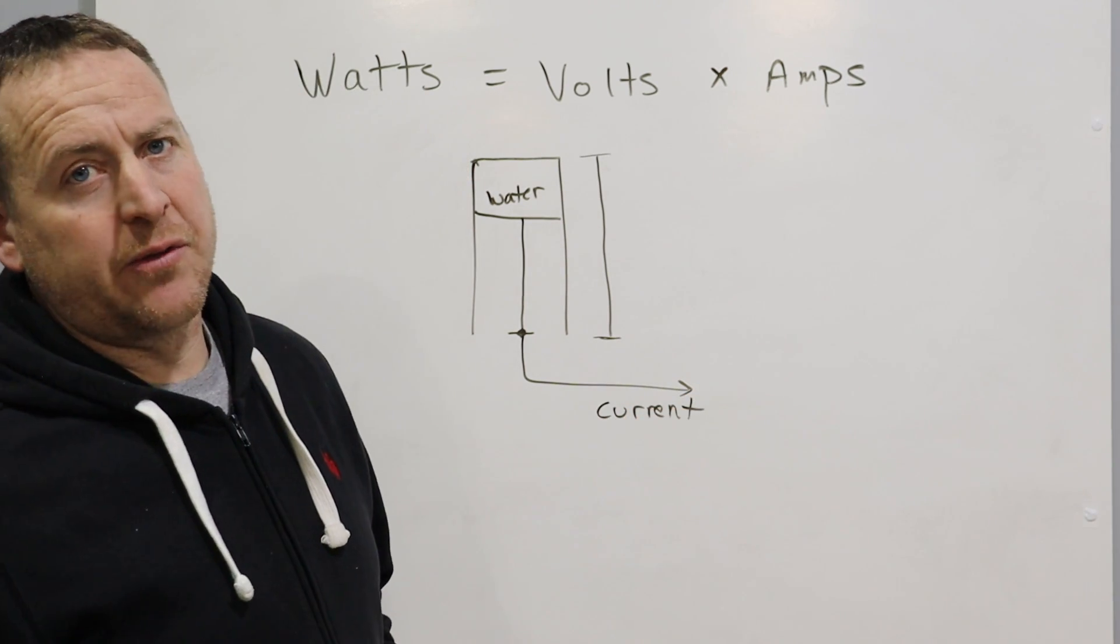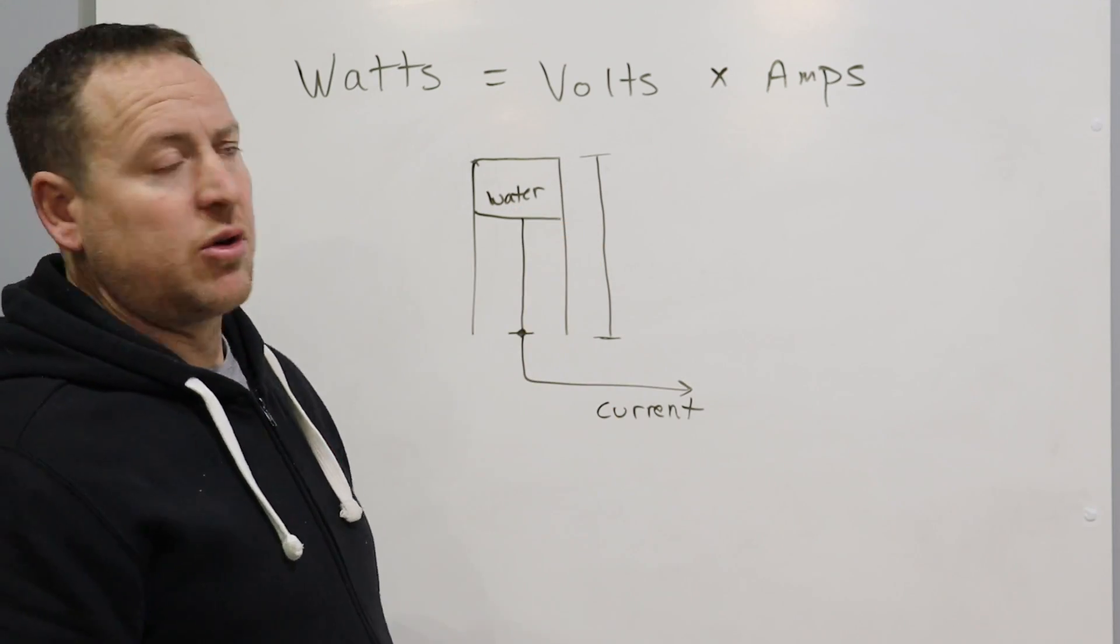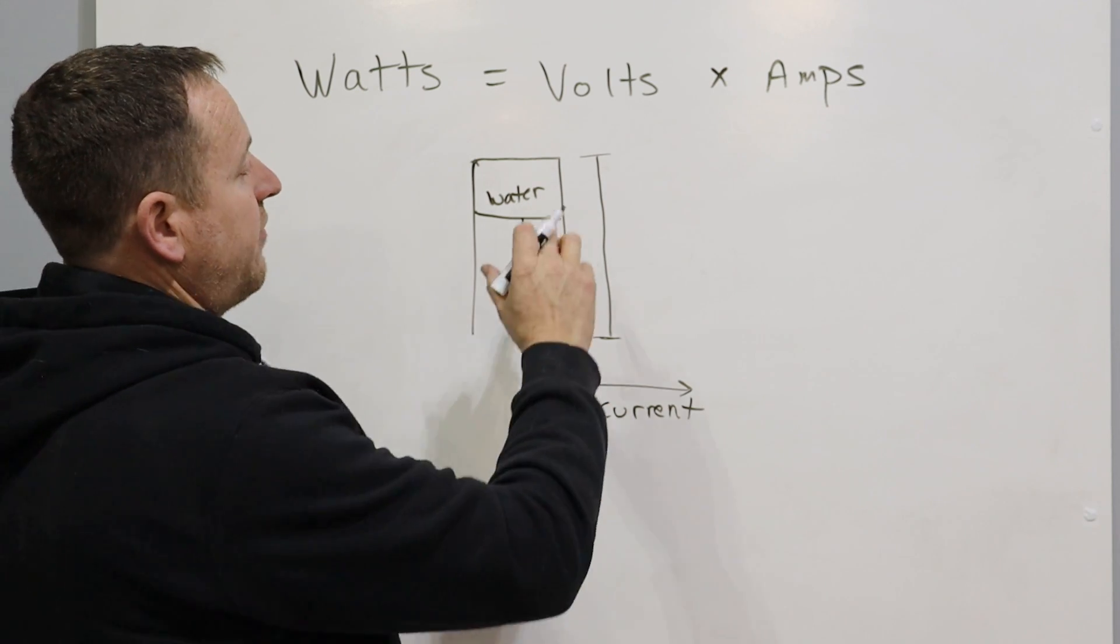The flow of water is current. But the pressure of the water, meaning the column of water here, and how much energy you have stored to actually push that water through the pipe, is our voltage.